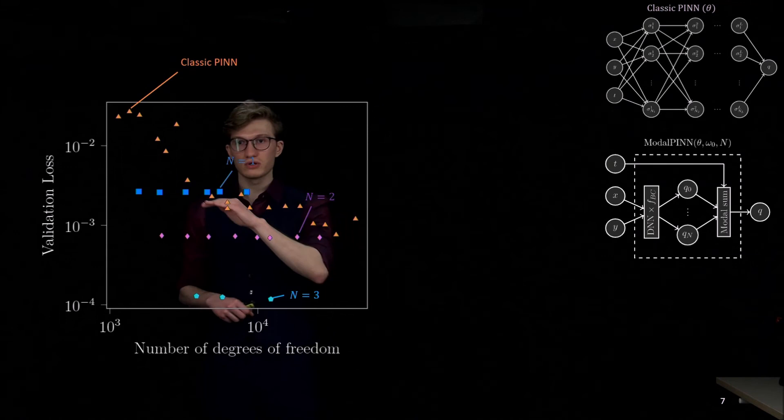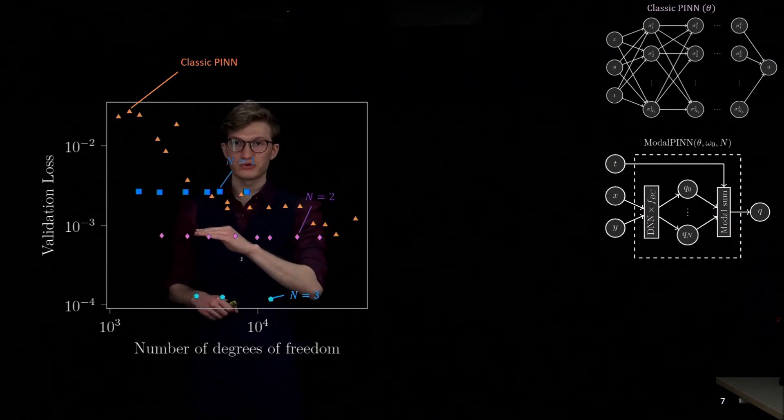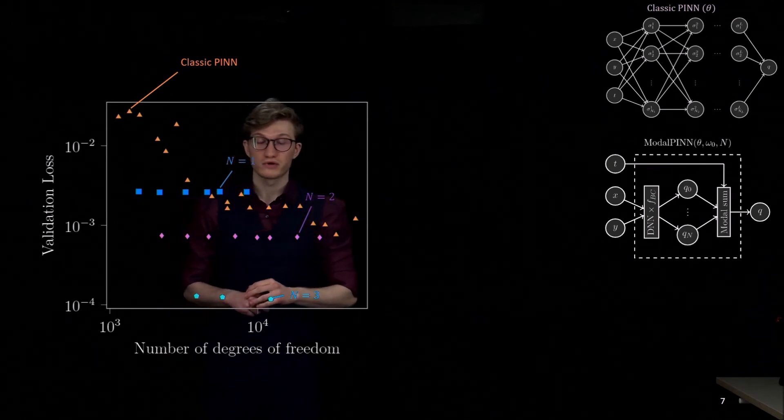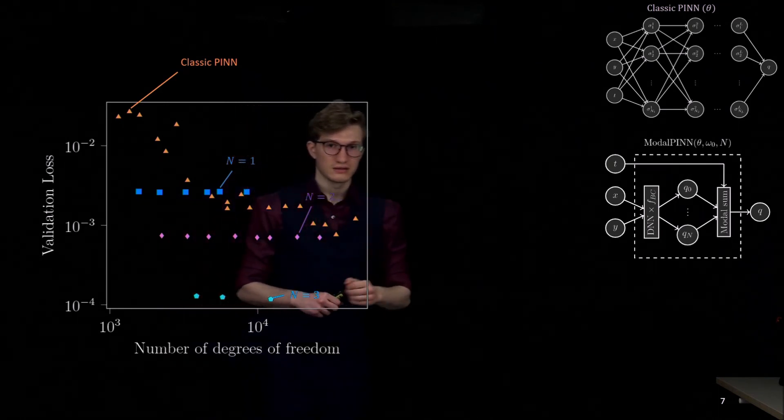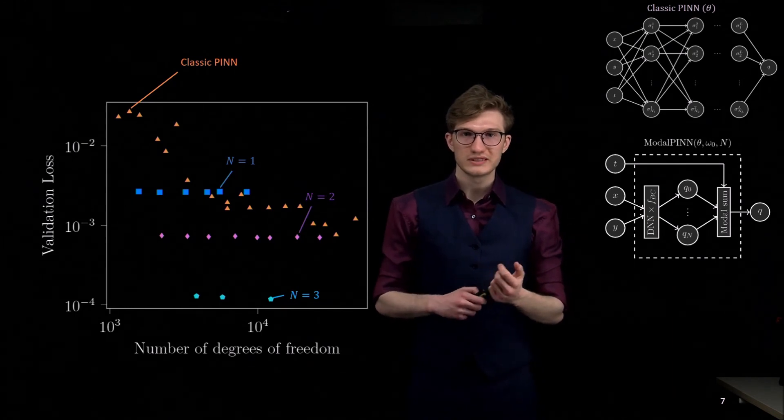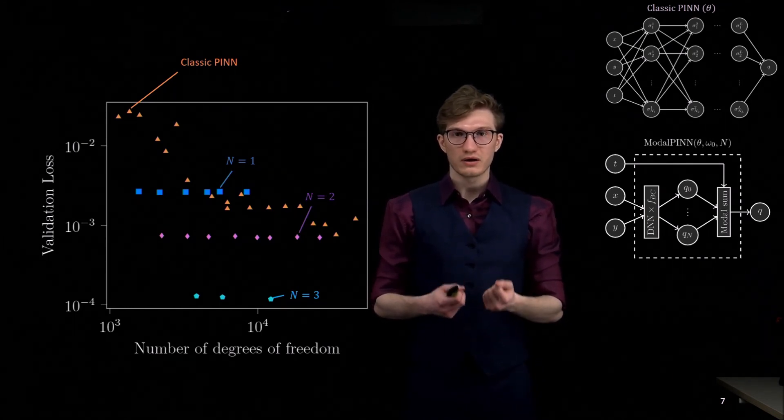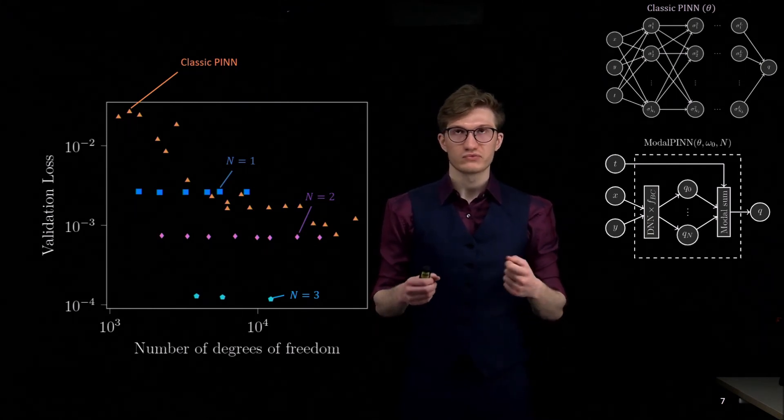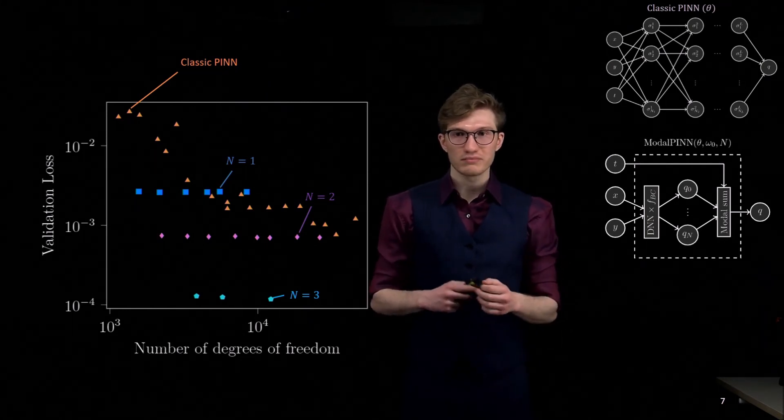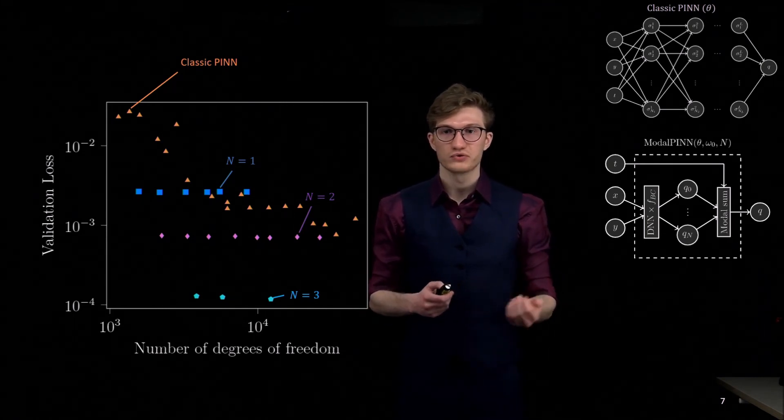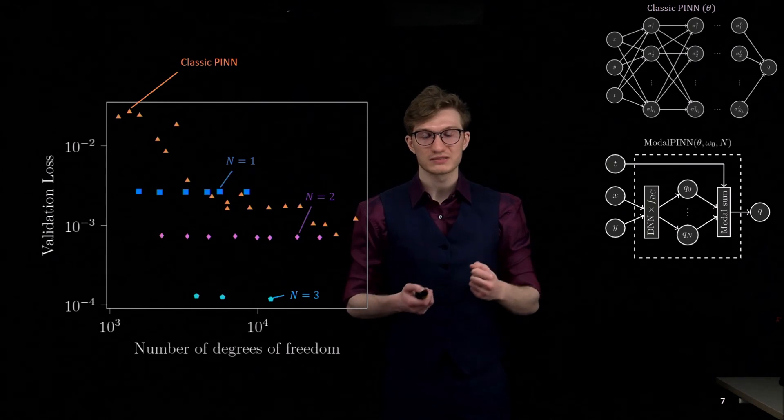Also, you can see that only with one mode or two modes, we got a very good approximation compared to what we can do with a classic PINN with the same number of degrees of freedom. And so this means that from a practical point of view, we will be able to do this reconstruction of the flow with lighter neural networks. So do it faster and also maybe look at problems that are more complicated, because we have a fewer number of degrees of freedom so we can optimize more complex things.